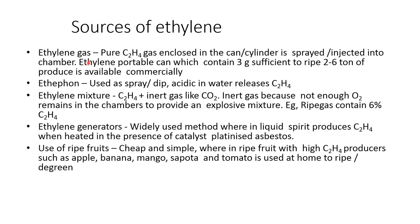Sources of ethylene: pure ethylene gas enclosed in a cylinder is sprayed or injected into the chamber. Portable cans containing 3 grams sufficient to ripen 2 to 6 tons of produce are commercially available. Ethylene is used as spray or dip. Ethephon in water releases ethylene. An ethylene mixture with inert gas like carbon dioxide is used. Ripening gas contains 6% ethylene. Ethylene generators are widely used, where liquid spirit produces ethylene when heated with a catalyst such as platinized asbestos.